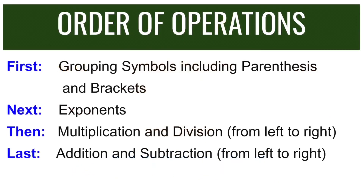In simplifying numerical expressions, we need to follow the order of operations. First, simplify any grouping symbols, including parentheses and brackets. Next, we need to simplify the exponents. Then, we need to multiply and divide from left to right. And lastly, we need to do addition and subtraction from left to right as well.